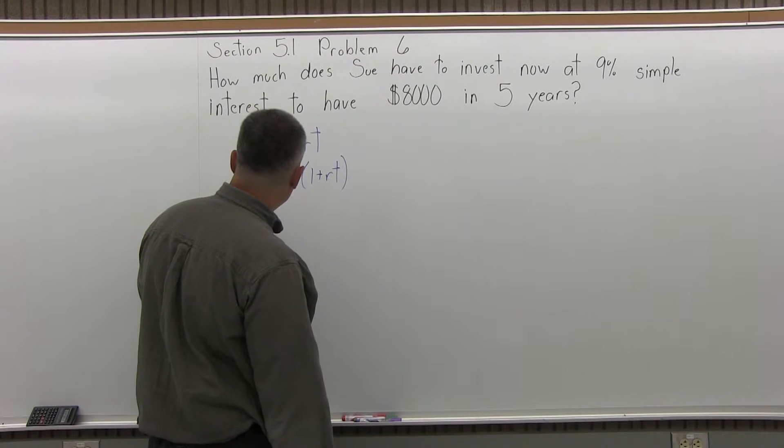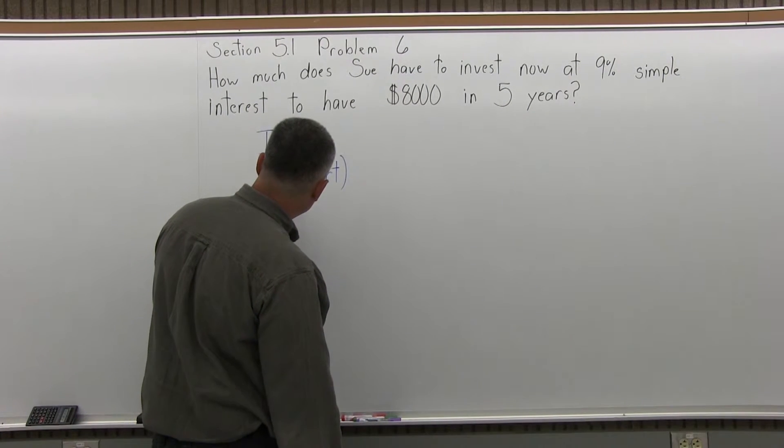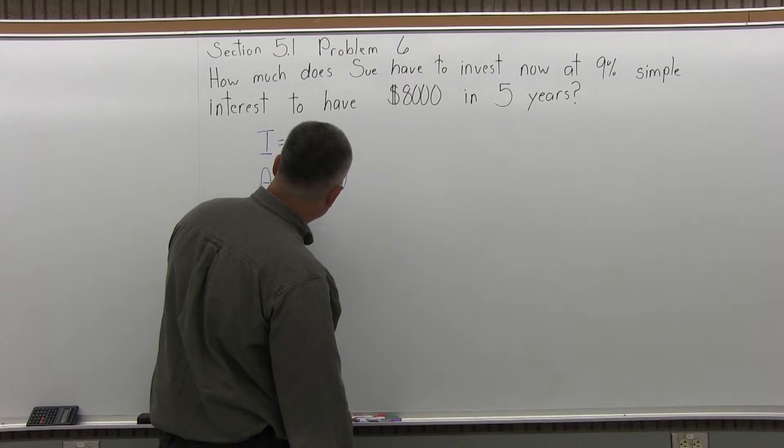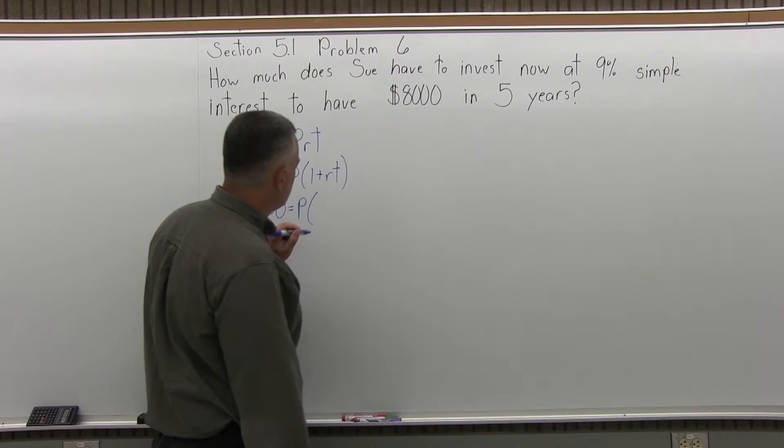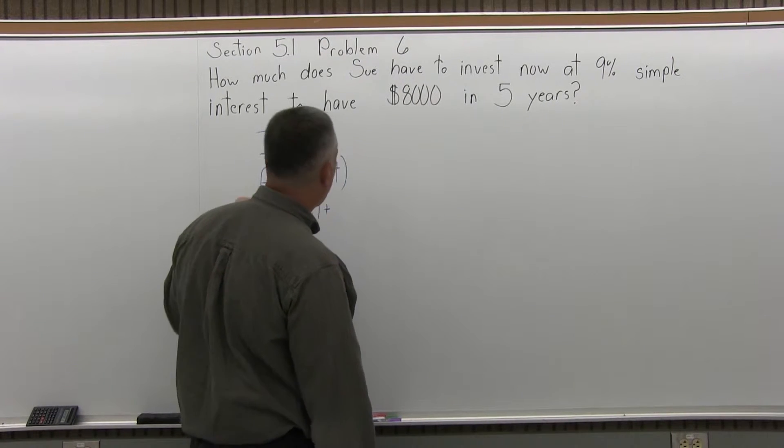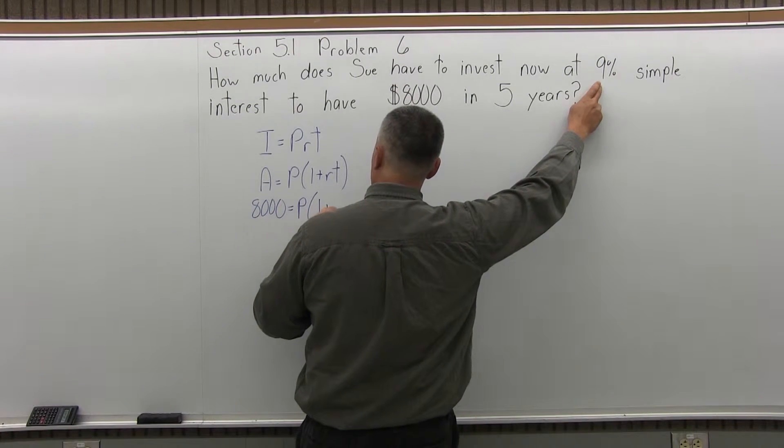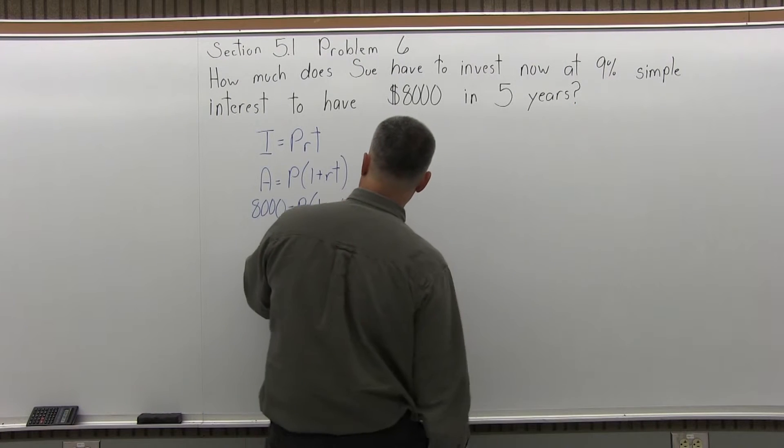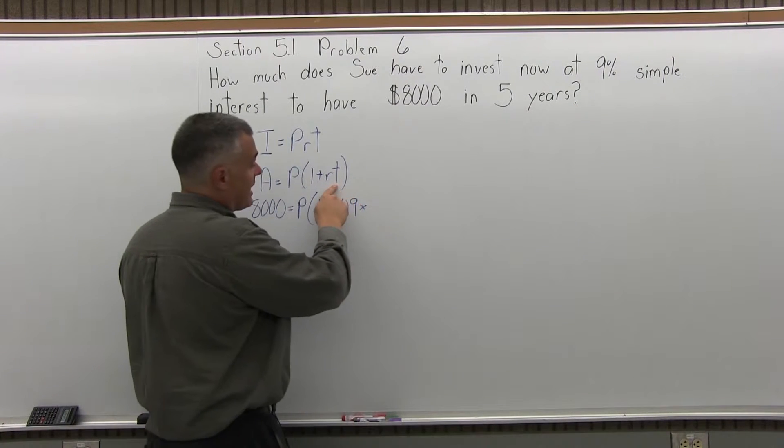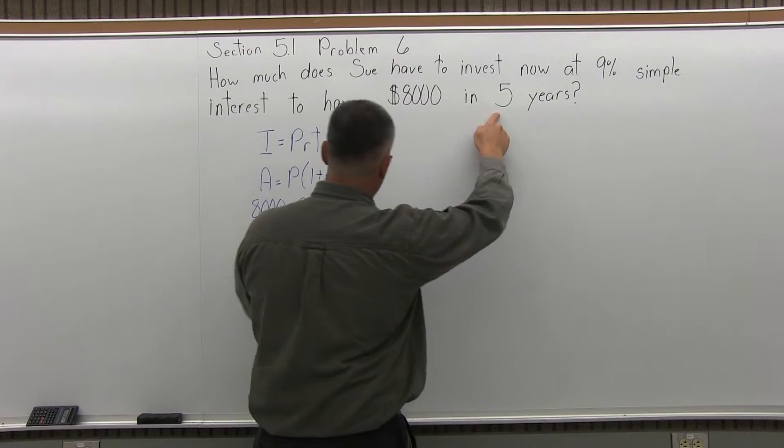So A, the final amount, is $8,000. P is unknown. Parentheses, 1 plus R, the rate as a decimal. The rate as a decimal, 9% goes in as .09 times T, the time in years. So the time in years is five years.